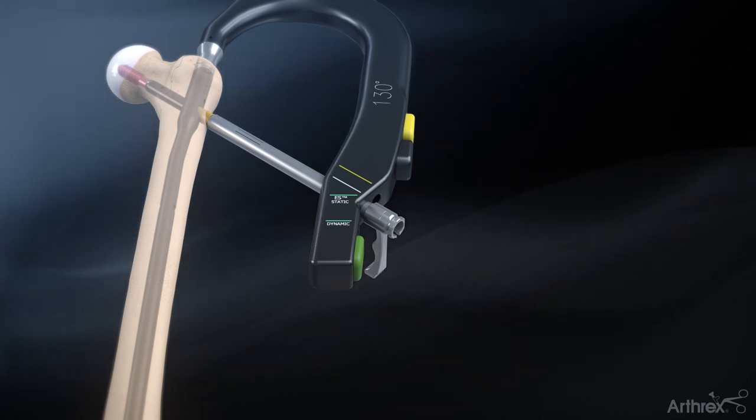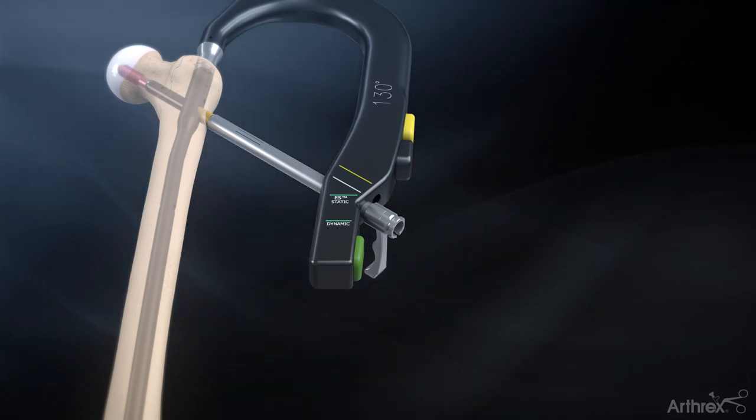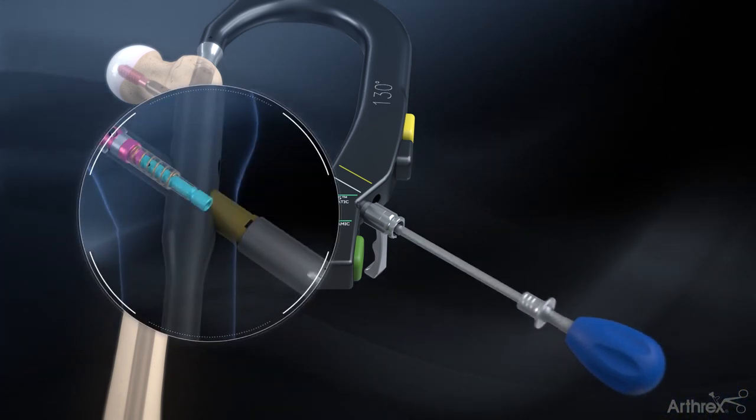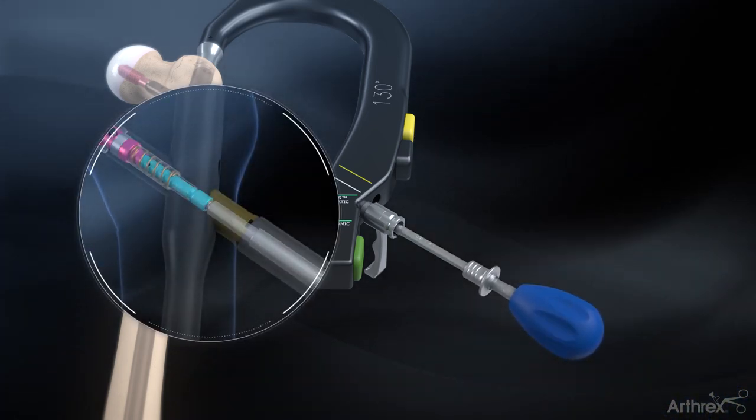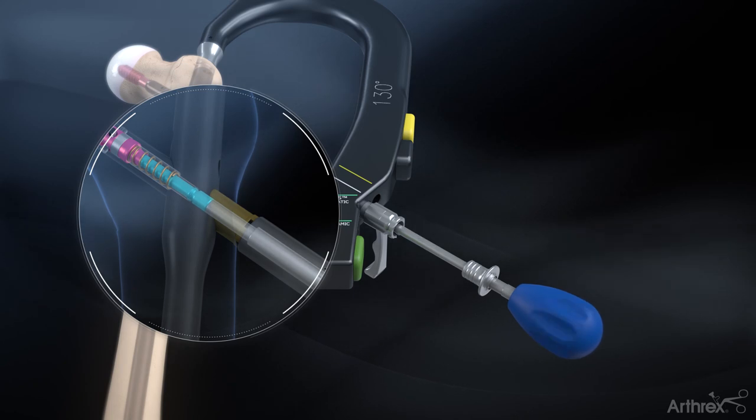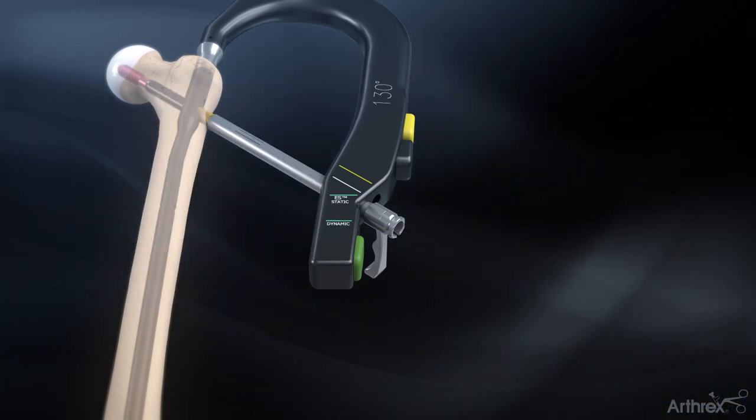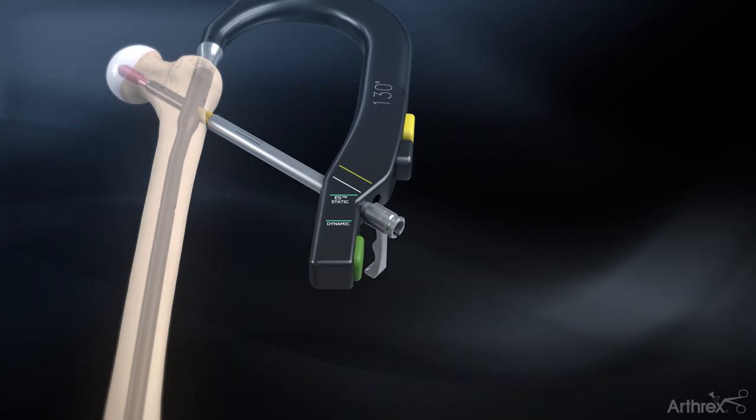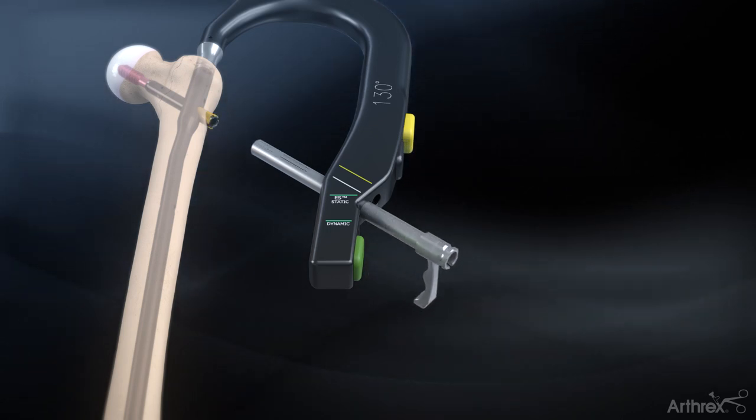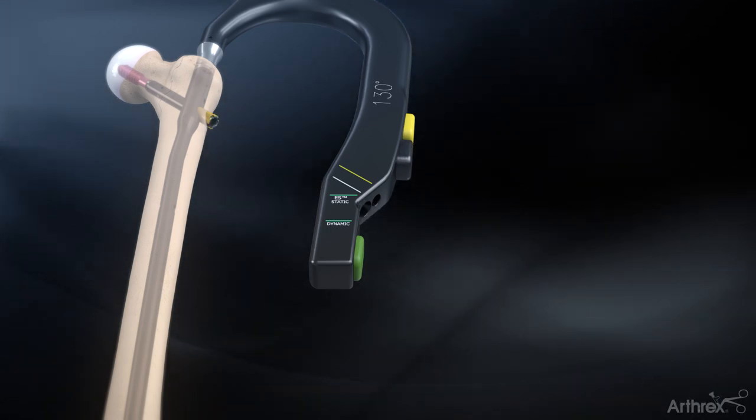To allow post-operative compression in the telescoping lag screw, remove the activation sleeve by inserting the activation tool through the sheath into the lag screw and turning counterclockwise. The activation sleeve will retain the tip of the activation tool once disengaged from the lag screw. Remove the lag screw sheath to complete the lag screw insertion.